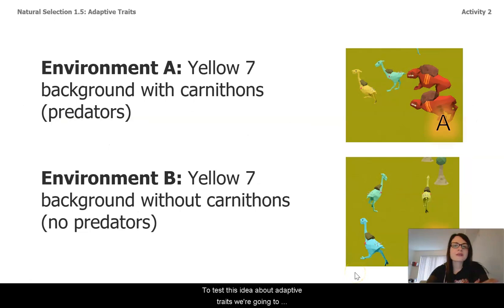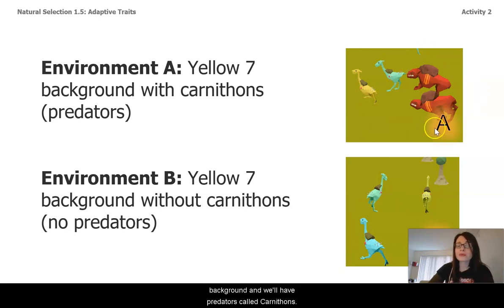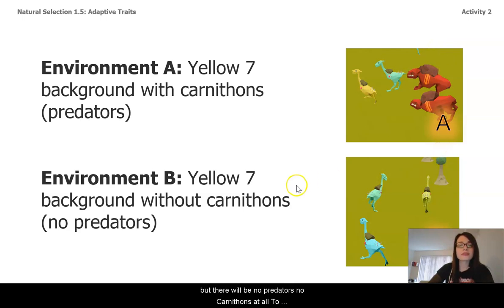To test this idea about adaptive traits, we're going to take the same population of ostrilopes and put them into two different situations. The first is environment A, where we'll have a yellow seven background and predators called carnathons. Environment B will be the same yellow seven background, but there will be no predators, no carnathons at all.